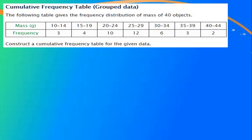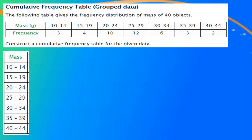Let's write the cumulative frequency table. The first thing to do is write the class intervals. To write the cumulative frequency table for grouped data, we are going to find the class boundary — specifically the upper class boundary. Class boundary means the true class limits. We find the true class limits by finding the adjustment factor.